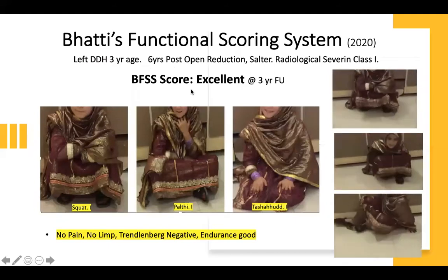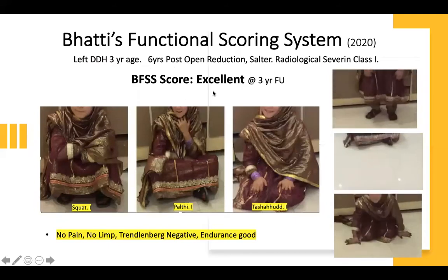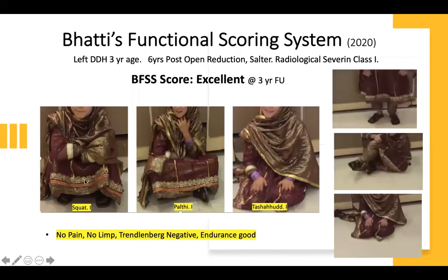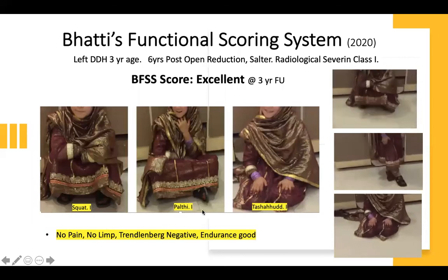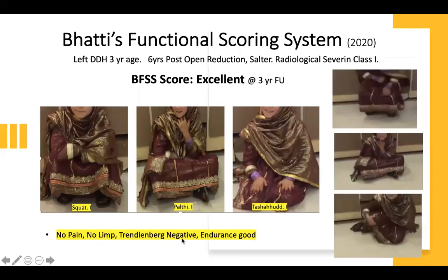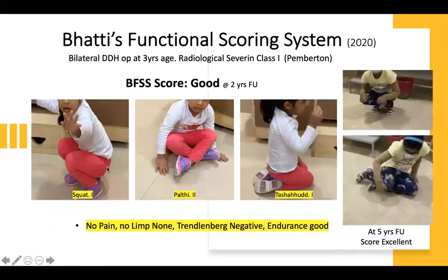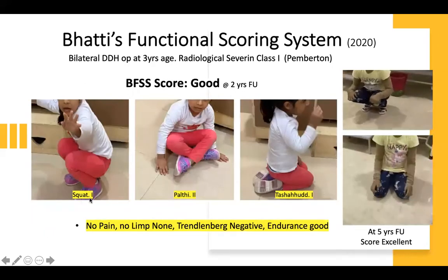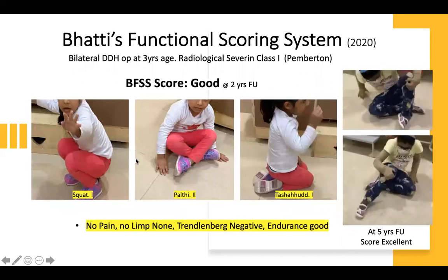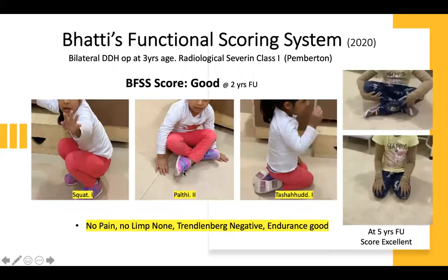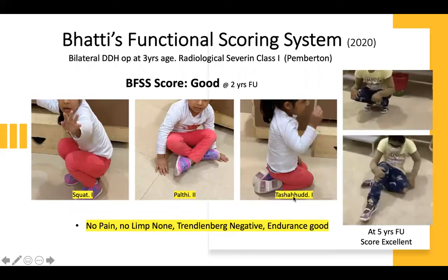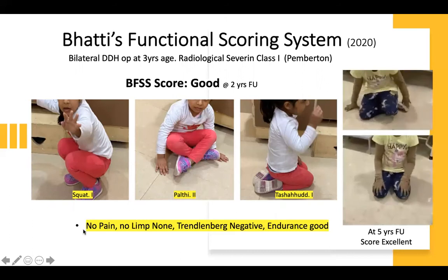Here we can see a child six years post-op, open reduction with Salter osteotomy. She has an excellent score with squat 1, palti 1, tashud 1, with no pain, limp, or Trendelenburg. A child who underwent Pemberton osteotomy at three years post-op is seen to be able to squat. She has difficulty doing palti, so it is given type 2, and she is able to do tashud, giving a good score.